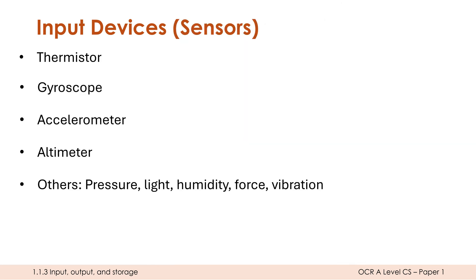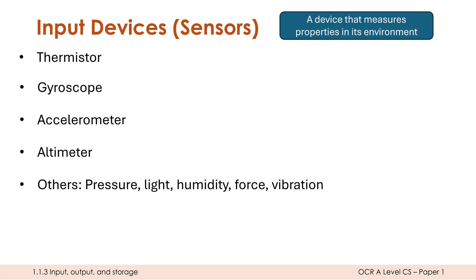To help with that, despite it not being absolutely necessary at A-Level, I want to give you some more technical examples you could use in your answers. Here is a list of different sensors. A sensor is a device that measures properties in its environment — usually automatically, it just sits there measuring what's going on around it.